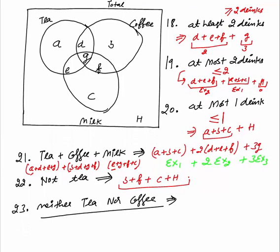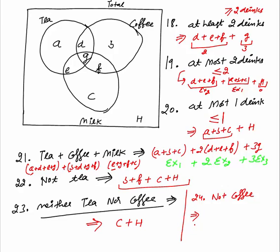Neither tea nor coffee means we have to exclude both tea as well as coffee — everything that lies outside the circle of tea and coffee. That is only C plus H. Not coffee simply means everything that lies outside the coffee circle, which equals A plus E plus C plus H.